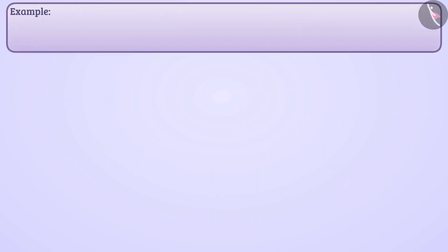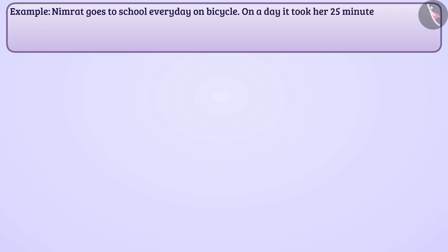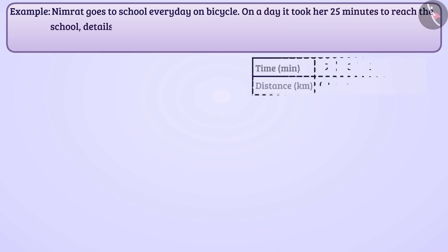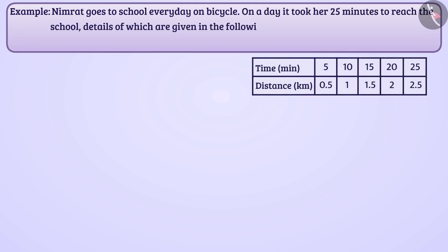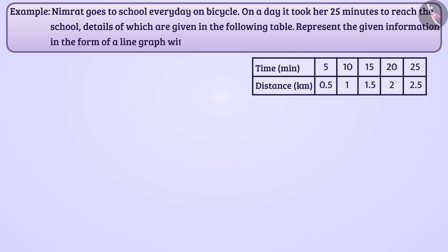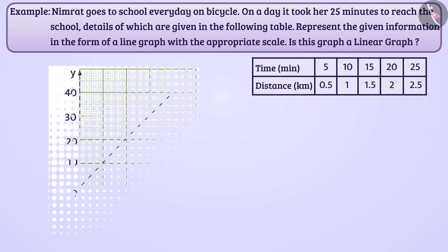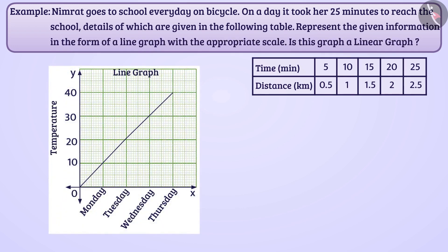Next example: Nimrat goes to school every day on bicycle. On a day, it took her 25 minutes to reach school. Details are given in the following table. Represent the given information in the form of a line graph with appropriate scale. Is this graph a linear graph? A line graph represents data that changes continuously over time.